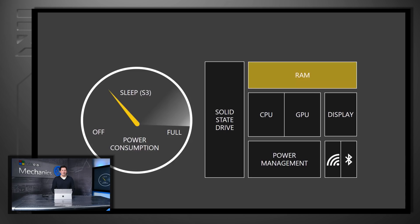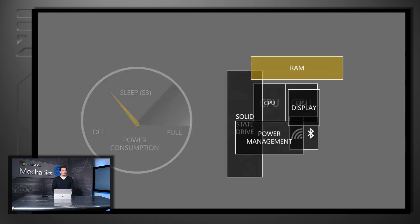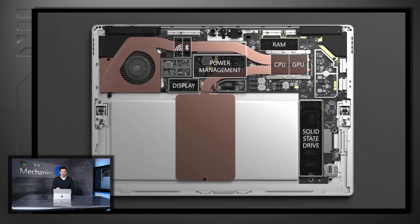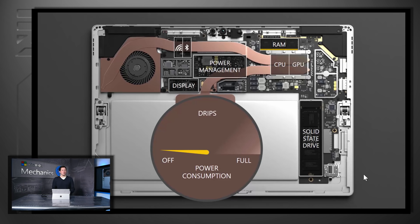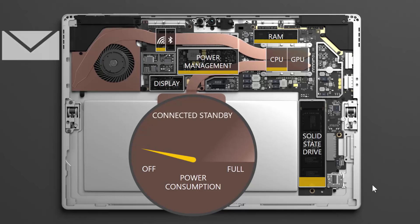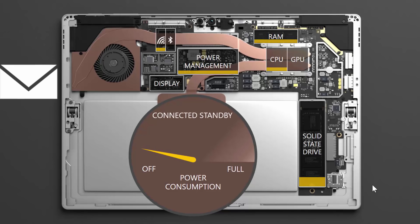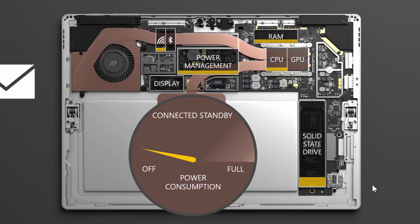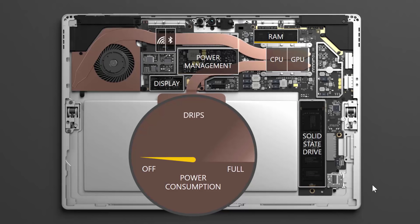Compared to S3, connected standby fine-tunes power management right down to the individual hardware components. You want your device to be in the lowest power state for as long as possible — this state is called DRIPS. From DRIPS, Surface is able to wake up small portions of the system at a time, just enough to handle background tasks such as an incoming email or other traffic coming across the network. Other devices such as cameras and sensors are never turned on, and after this it returns back to DRIPS.